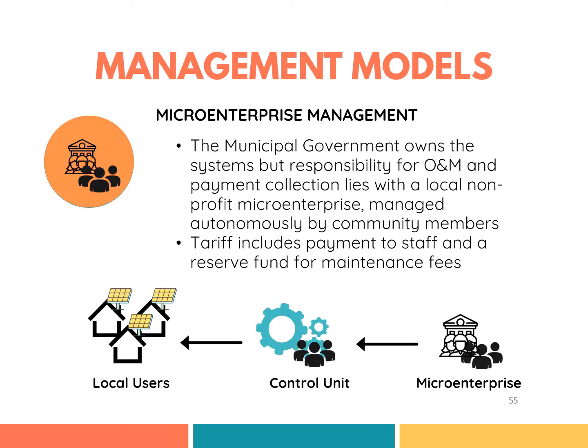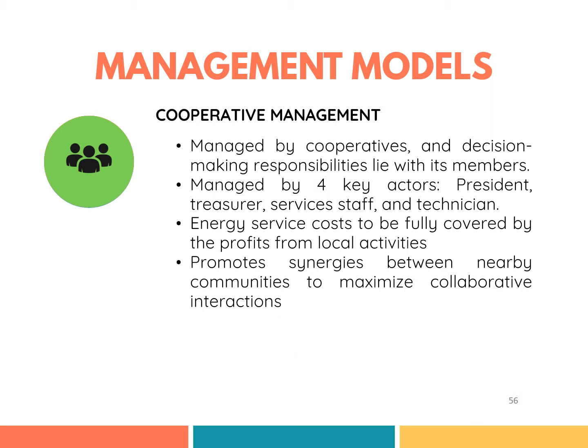In microenterprise models, rural electrification is owned by the municipal government, but operations, maintenance, and payment collections are borne by the local non-profit microenterprise. A control unit is created, made up of locals responsible for users' compliance. The tariff payments are used fully for operations, and any excess is accumulated as a reserve fund; if insufficient, the municipality provides financial support. For the cooperative model, the system is managed by cooperatives and decision-making responsibilities lie with its members. There are four main actors ensuring efficient and sustainable operations, including a services staff responsible for promoting local economic activities. Sustainability for this system is highly dependent on the economic activity of the area, as no external financial support is expected.